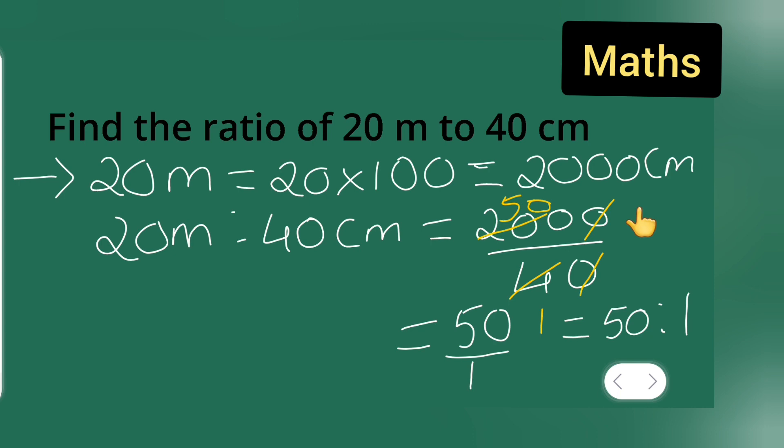So we have written this in ratio form. So we have found the ratio of 20 meter to 40 centimeter. So here this is our ratio, 50 to 1. We have found the ratio between these two numbers. I hope you will have understood and thanks for watching.